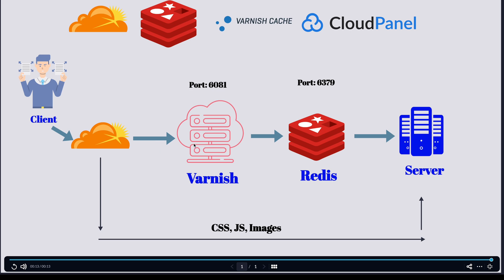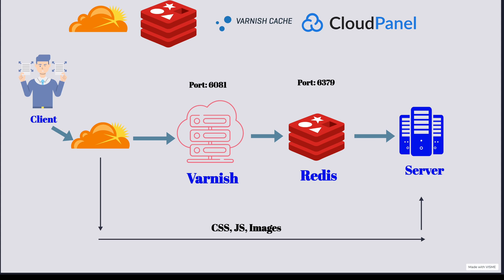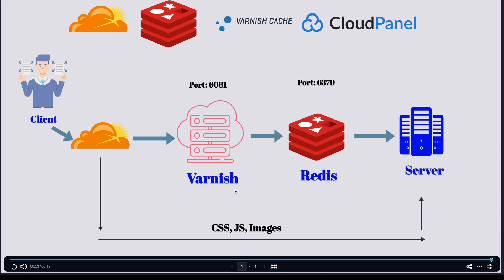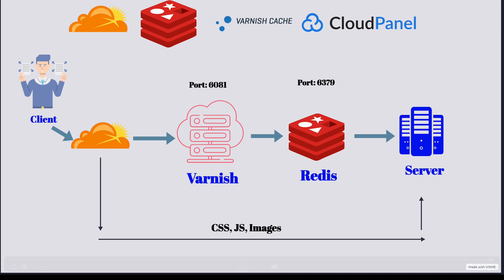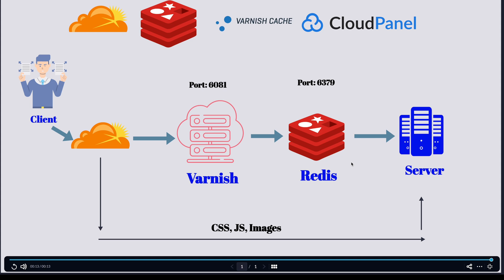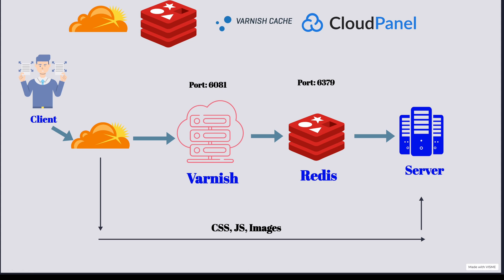Then it will go to Varnish Cache in case the page is not there, to fetch it and store it. Varnish Cache will act as a front-end for your server, which will store the page on your server - it will not store images and things like that. Varnish will communicate with Redis for the objects in PHP or queries. Redis will store these objects in memory and when there's a request from Varnish to fetch these queries, it will go to Redis and fetch from there. This is very fast and you will have a very speedy WordPress website at the end, helping the server not be loaded with a lot of requests.